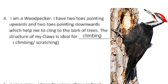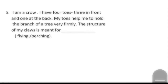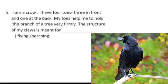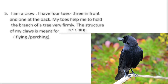Question number 5, our last question of this exercise: I am a crow. I have four toes, three in front and one at the back. My toes help me to hold the branch of a tree very firmly. The structure of my claws is meant for — the options are flying or perching. Our answer is perching. Claws on feet are used for grasping prey, for perching, for scratching the ground, or fighting.